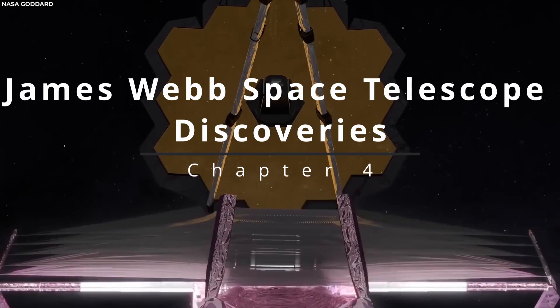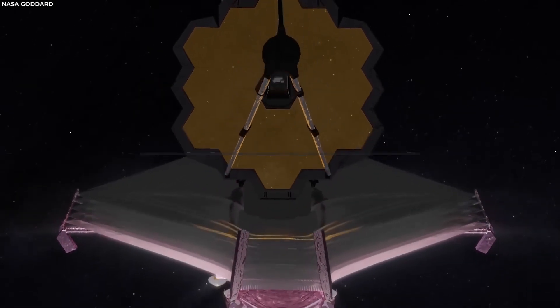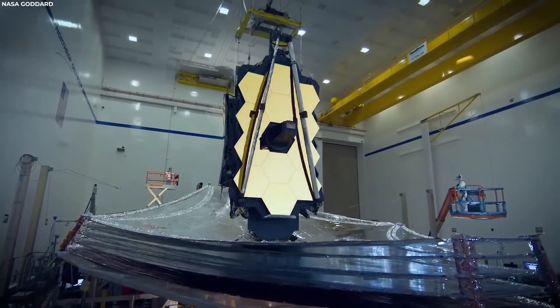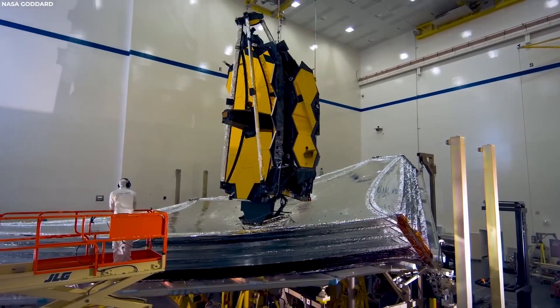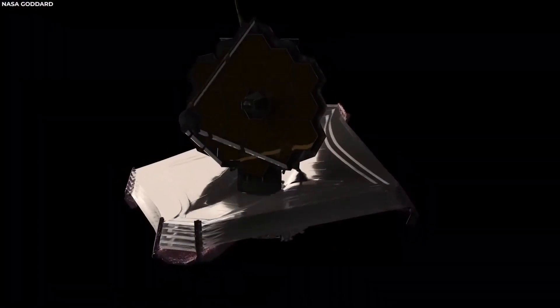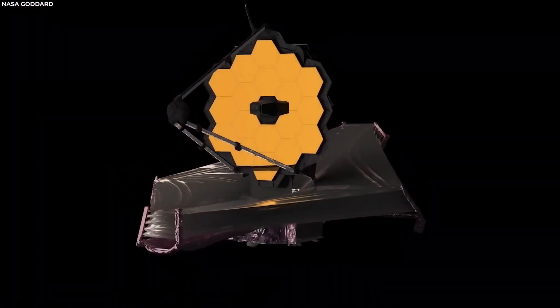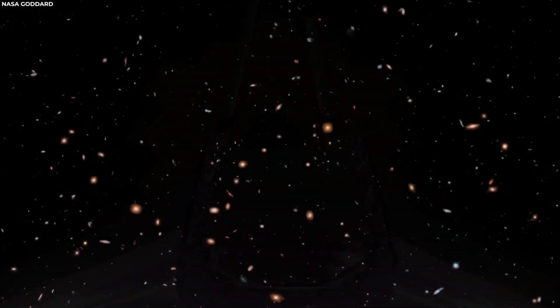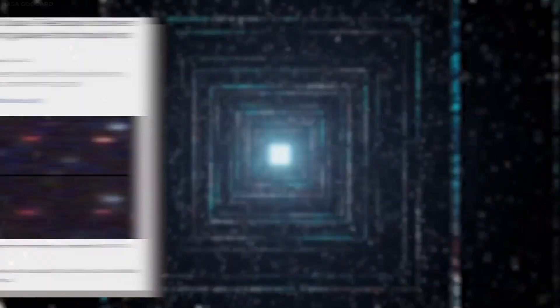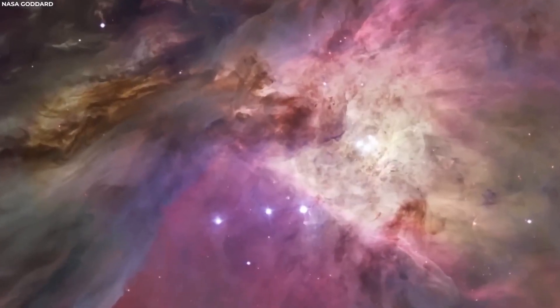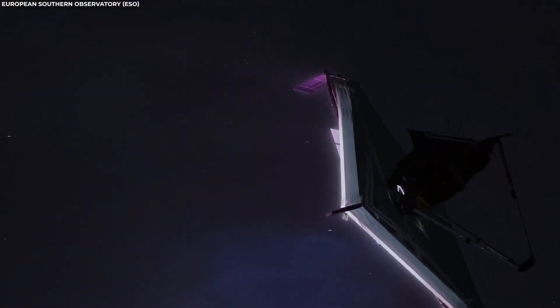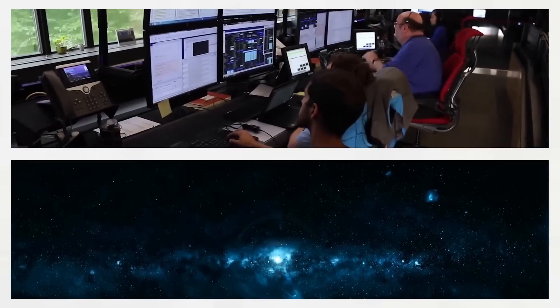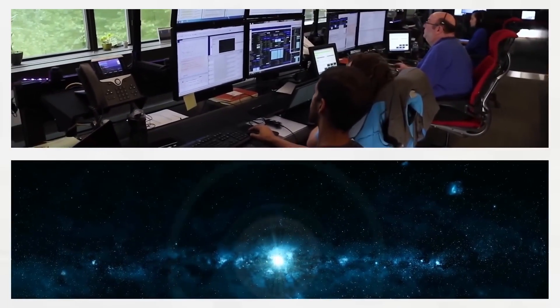Chapter 4. James Webb Space Telescope Discoveries. In the vast expanse of our universe, the James Webb Space Telescope, or JWST, stands as a beacon of exploration, unlocking the cosmic secrets of our past. This remarkable instrument, with its advanced technology, has recently astounded the astronomical community with a groundbreaking discovery, flipping our understanding of the early universe on its head.